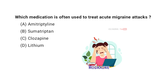Which medication is often used to treat acute migraine attacks? A. Amitriptyline, B. Sumatriptan, C. Clozapine, D. Lithium. Drop your answers in the comment section below.